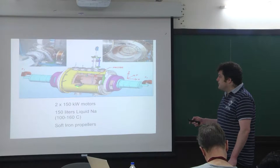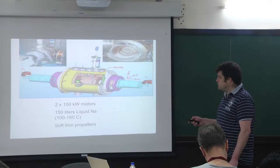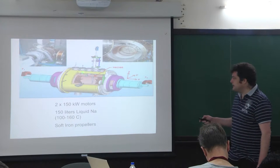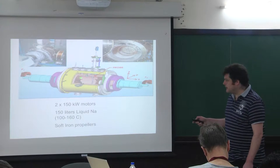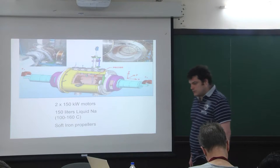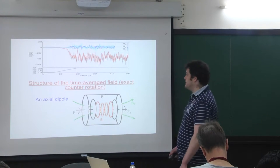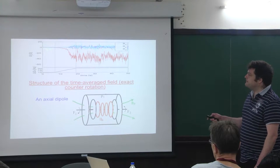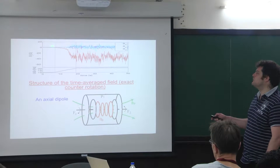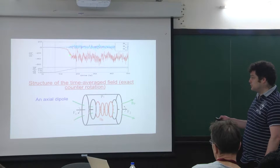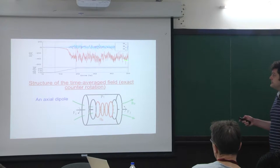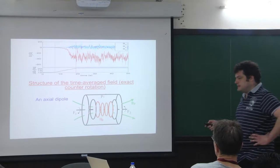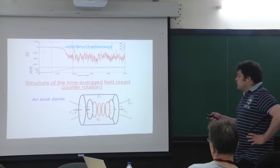The fluid is put into motion by the rotation of these disks. We observe that if the disks are made of soft iron, then we can observe the dynamo instability, whose typical time series is represented here. Starting with a rotation of around 10 hertz and increasing the rotation of the disks, the magnetic field, which is initially very small, will increase roughly exponentially and then saturate to some value controlled by the nonlinear regime of the instability. The fluctuations are quite large, which traces back to the turbulent nature of the flow.